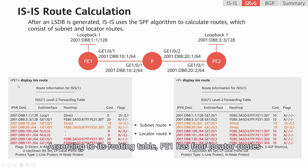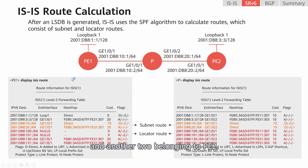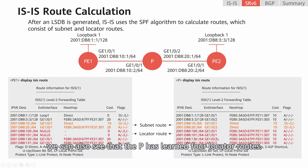According to its routing table, P1 has four locator routes, consisting of two routes belonging to P1 and another two belonging to P2. When observing the P's routing table, we can also see that the P has learned four locator routes.